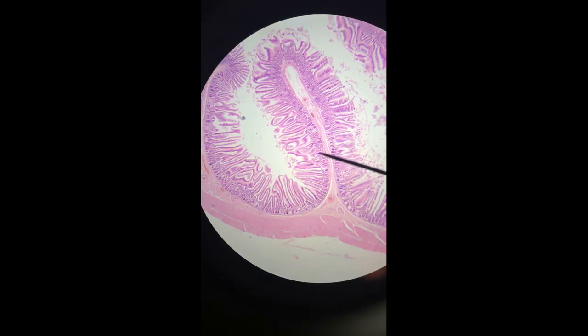The intestinal villi and then the other big fold that you can see, we'll find it, is a circular fold and all of those things are visible right here. Right there.